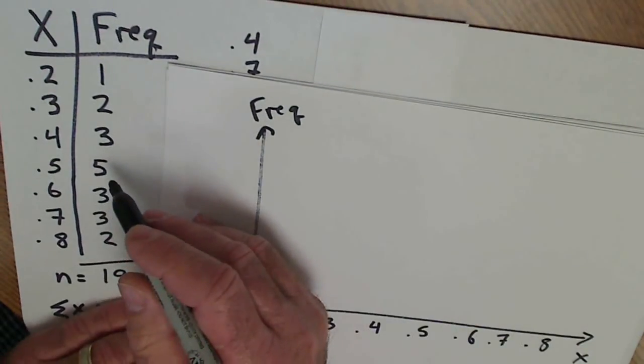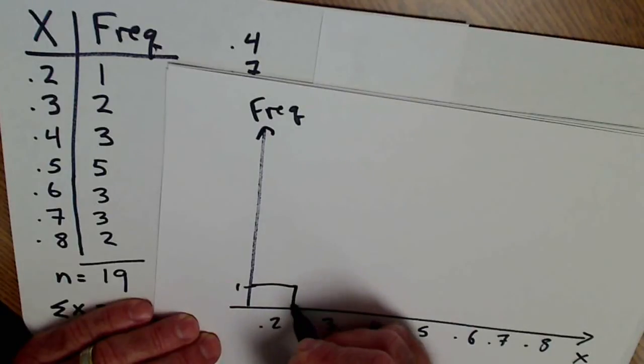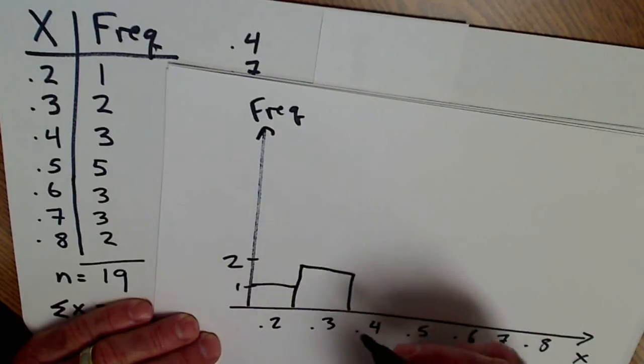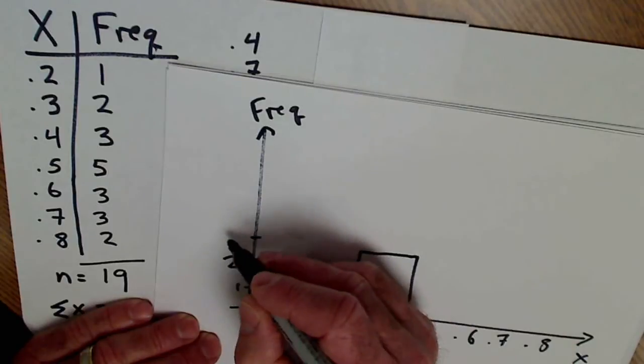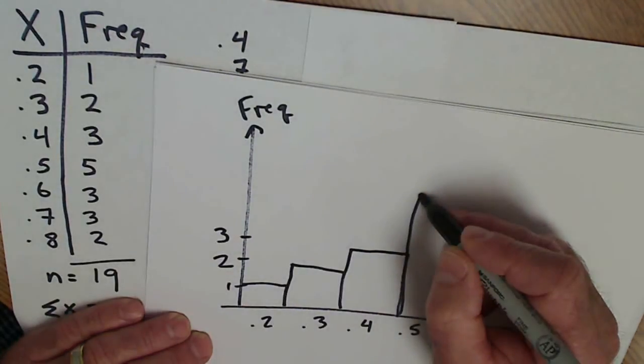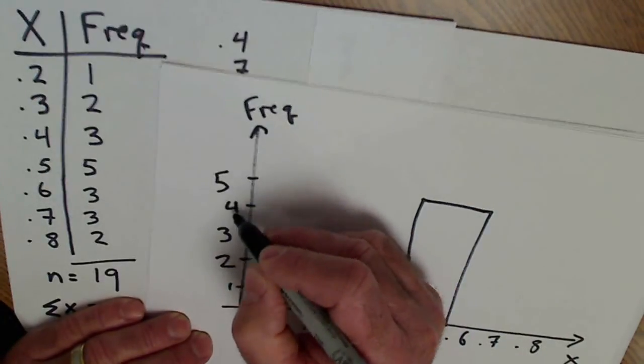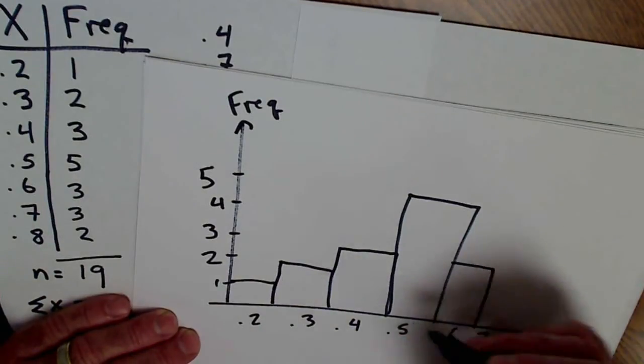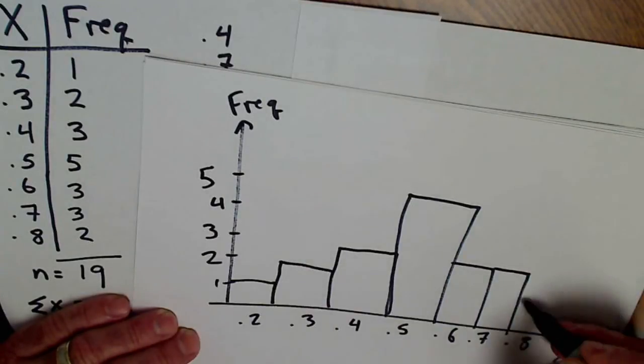If I look at how often they occurred here, my frequency, I have one 0.2, I have two 0.3s, 0.4, I have three of those. I have three 0.4s, I have five 0.5s, which I know is the most because it was my mode. Down to 0.6s, I have three 0.6s, I have three 0.7s, I have two 0.8s.